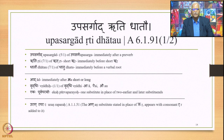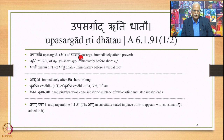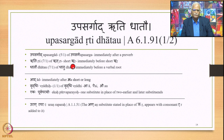Now let us move to the other rule: Upasargad Ruti Dhatav. This is another rule stating the Vriddhi substitute. The sutra has three words: Upasargad — 5th case of Upasarga, meaning immediately after the preverb; Ruti — 7th case of Rut, denoting short ru-vowel, meaning immediately before short ru; and Dhatav — 7th case of Dhatu, meaning immediately before a verbal root.